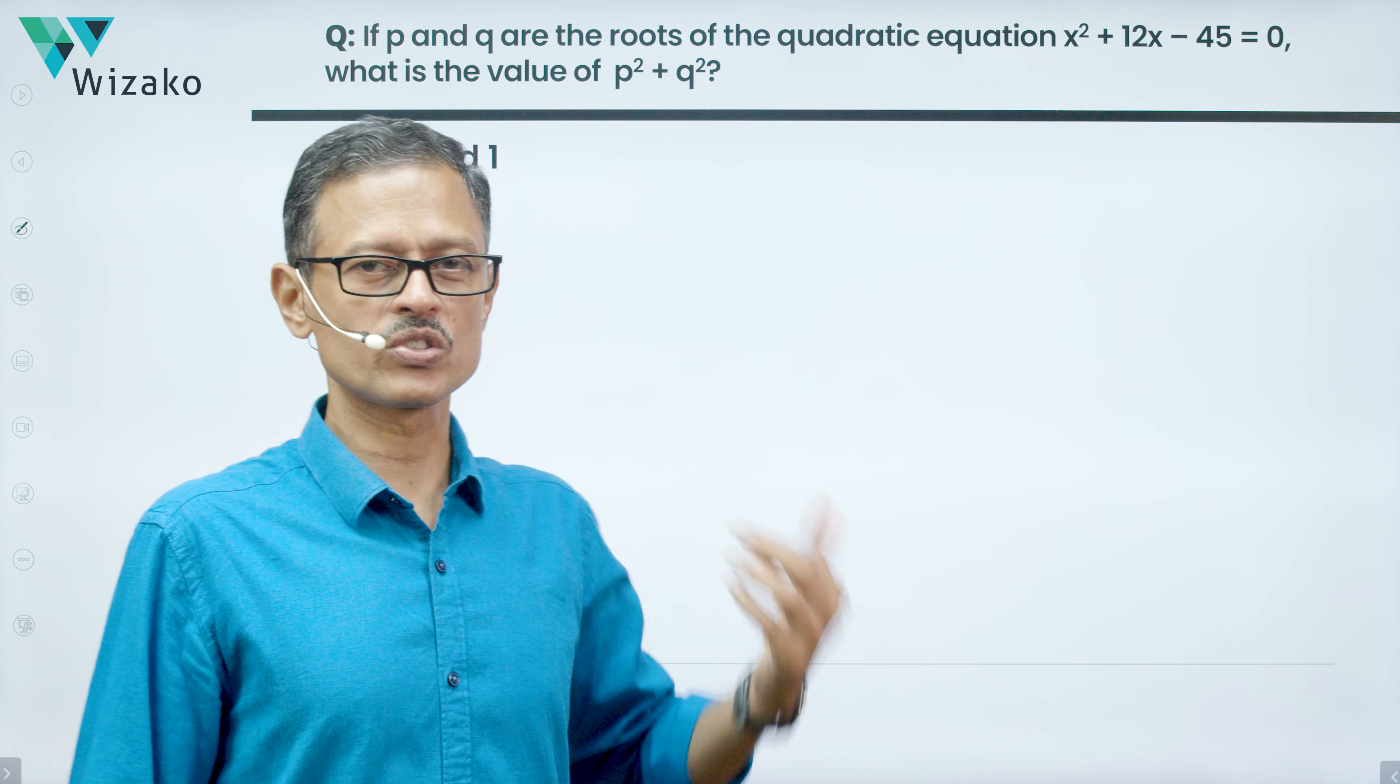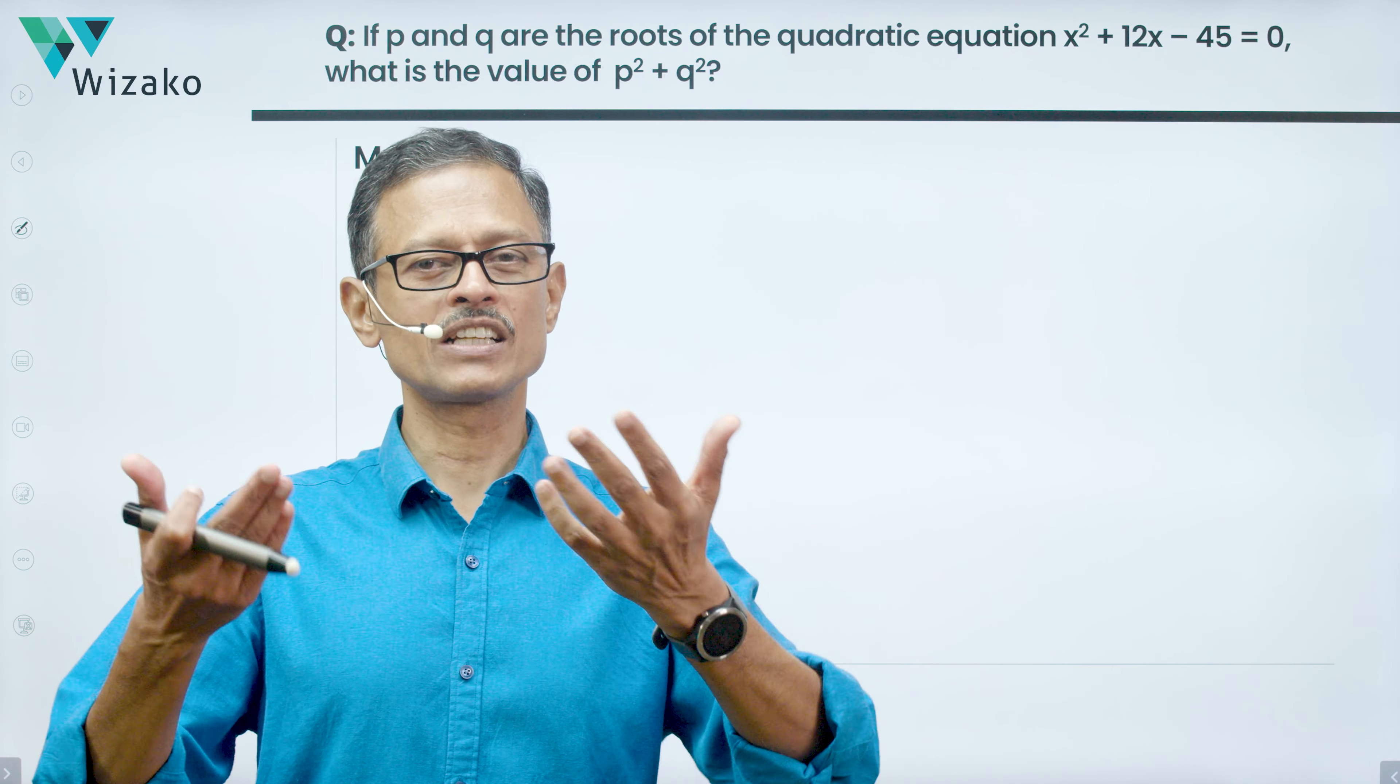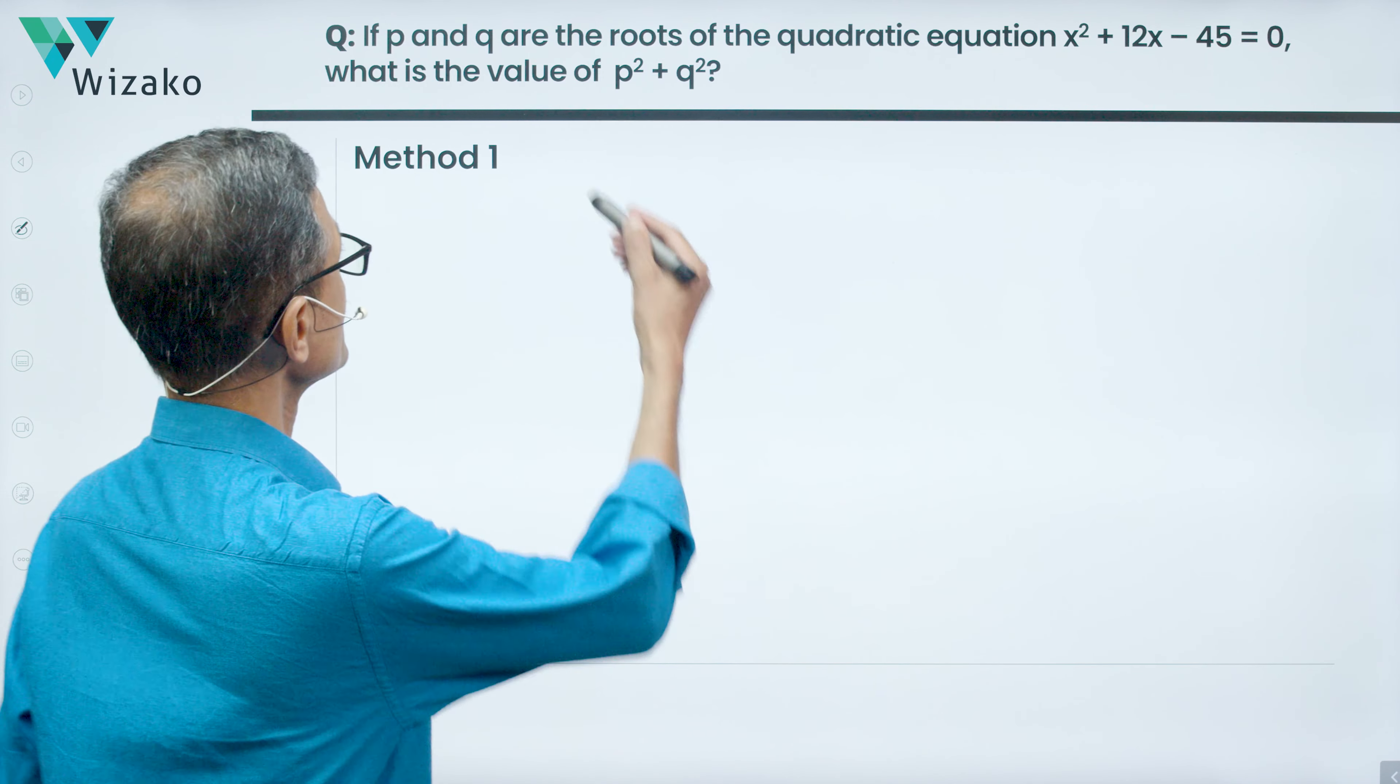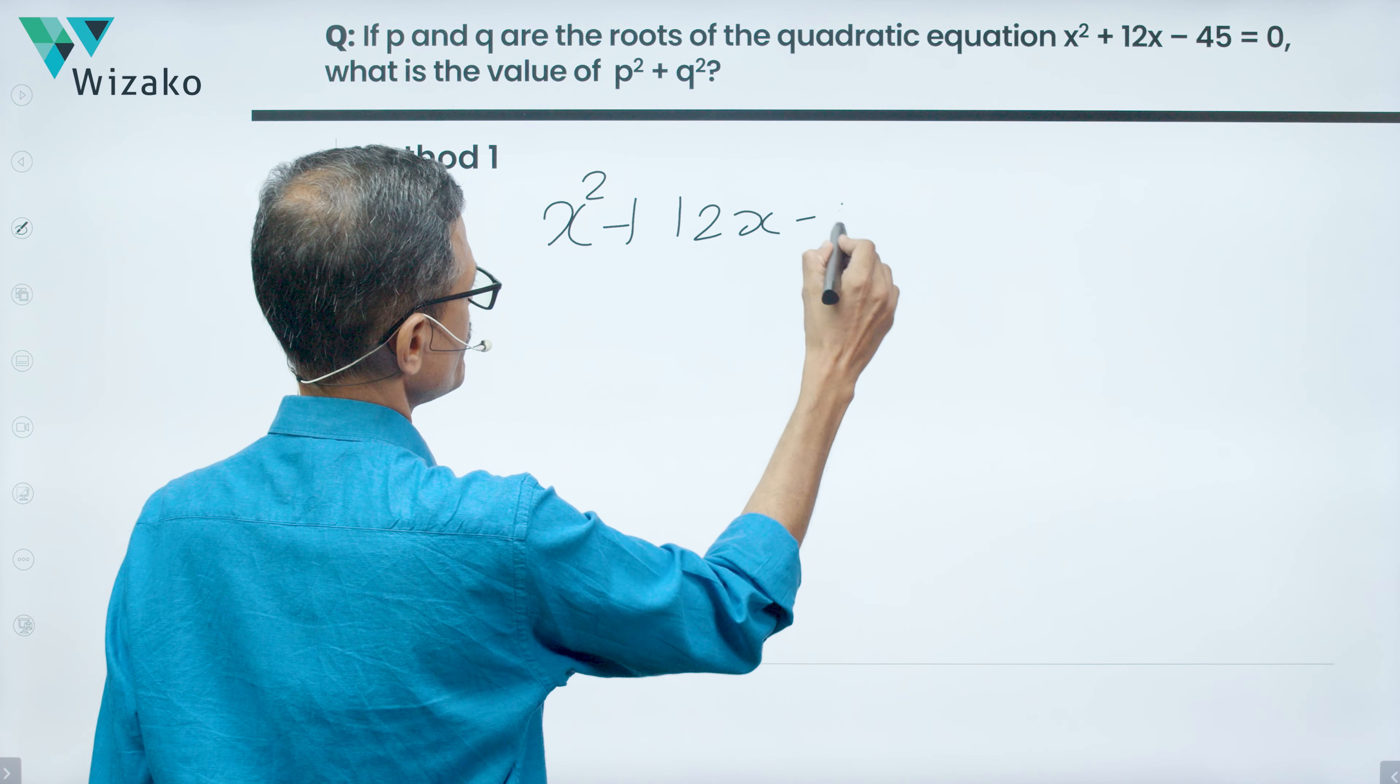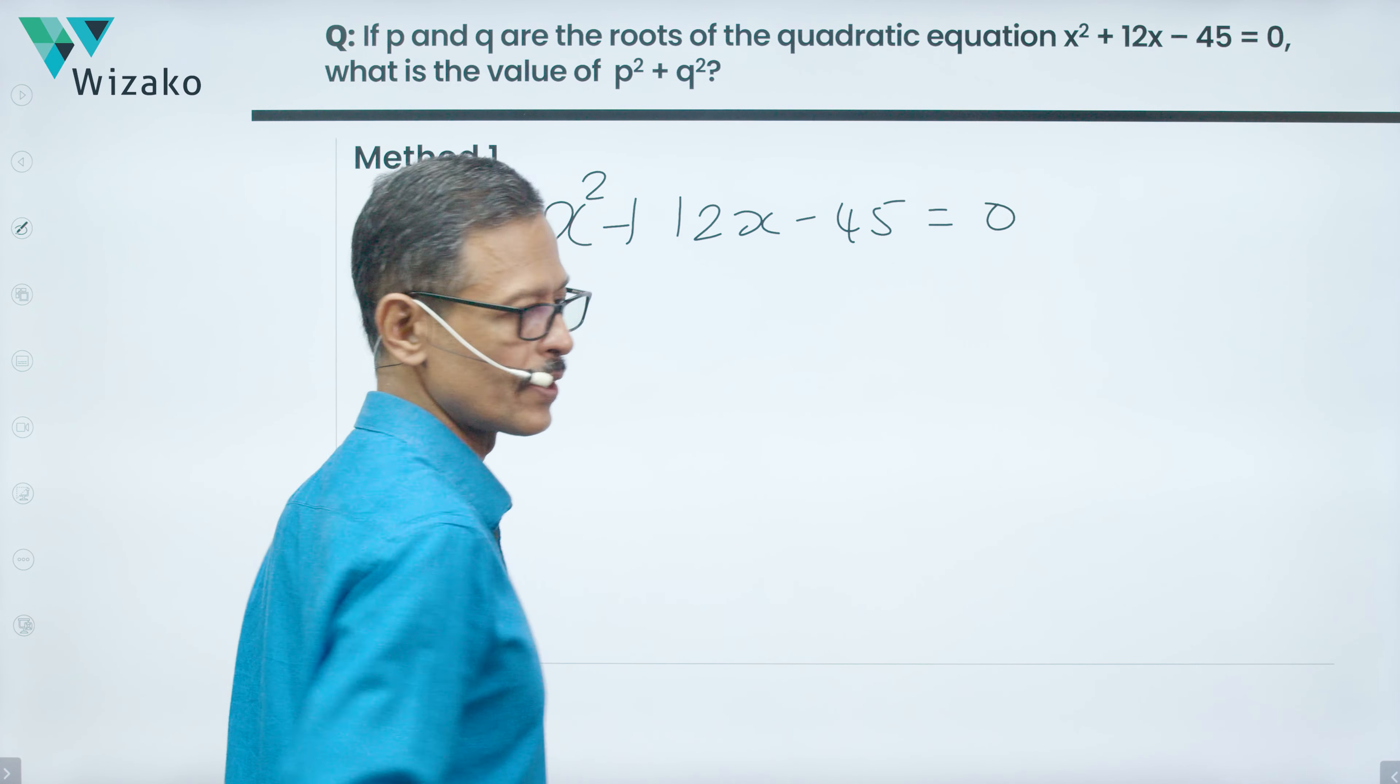p and q are the roots of this quadratic equation. Let's find out what is p, what is q, and then find out p² + q². The quadratic equation is x² + 12x - 45 = 0.